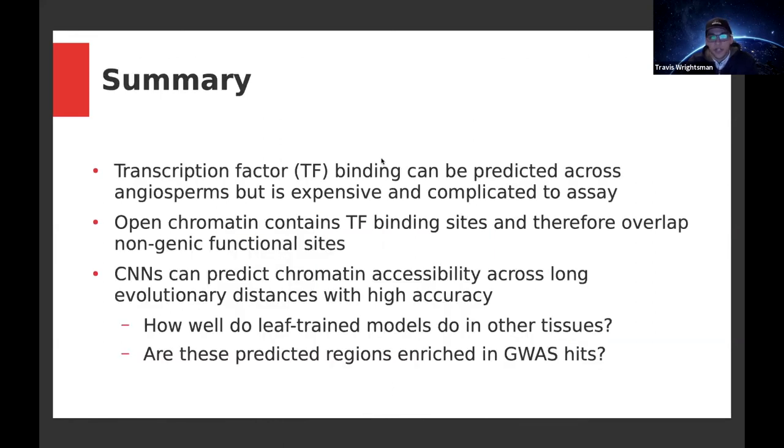In summary, I've shown that transcription factor binding can be predicted across angiosperms, but is unfortunately expensive and complicated to assay. Open chromatin also contains transcription factor binding sites and therefore overlaps our non-genic functional sites. Therefore, CNNs can predict chromatin accessibility across long evolutionary distances with high accuracy. A couple more things I want to follow up on: how well do these leaf train models do in other tissues, and are these predicted regions enriched in GWAS hits and other signals of regulatory regions?